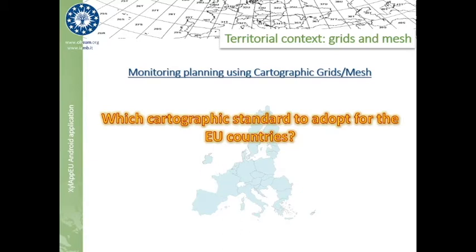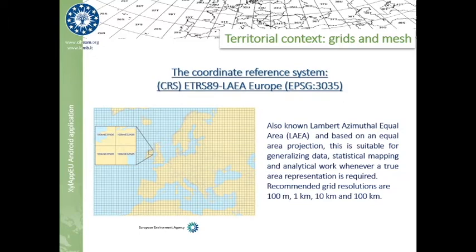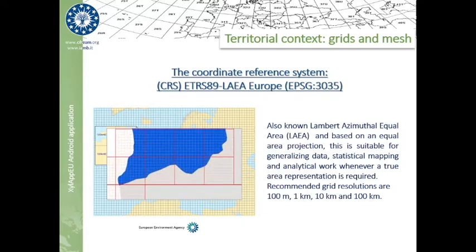Because the Apulian grid leans on an Italian standard, the problem was how to guarantee the same testing system outside Italy in a rigorous way. So we ended up with the adoption of the ETRS89 standard, which is suitable for generalizing data, statistical mapping and analytical work, whenever a true area representation is required. Moreover, ETRS89 easily scales to different mesh sizes, such as 100m to 100km per side.